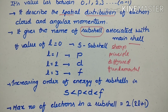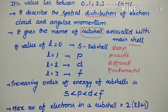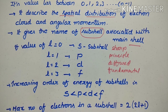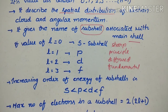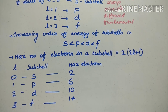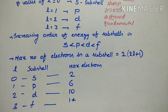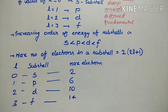The azimuthal quantum number also describes the increasing order of energy of subshells: s is less than p, which is less than d, which is less than f. This gives the relative energy of each subshell.